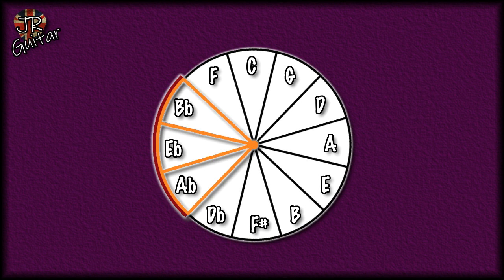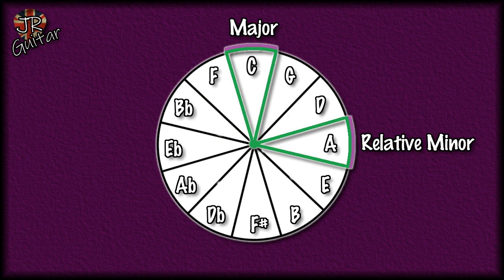This is a much easier way of figuring out what the major chords are in any key, rather than deriving a major scale and stepping through it. You can just look at the cycle of fifths and see it pretty much instantly. Now what about minor chords? Every major chord has a relative minor — every major scale, every major pentatonic, every major entity has a relative minor, and vice versa.